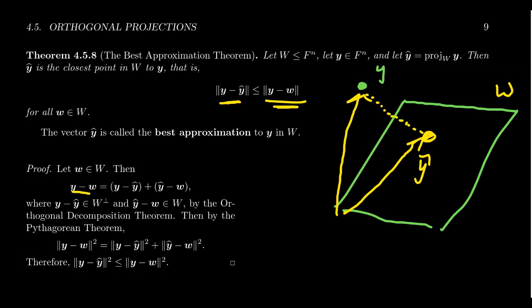Well, first of all, we're just going to insert y-hat into the equation. So take y minus y-hat plus y-hat minus w. Notice, of course, y-hat minus y-hat, they cancel, just get back y minus w.